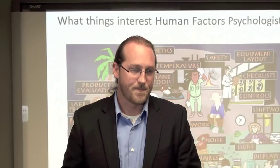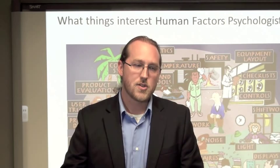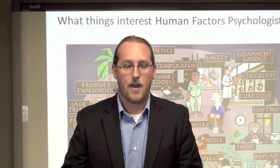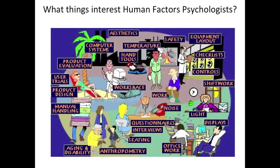So what type of things interest human factors psychologists? There's a variety of different topics. These range from aesthetics — how something actually looks and feels — to product evaluation, product design, manual materials handling, aging and disability, anthropometry, office work and shift work, controls, checklists for safety, how we lay out equipment, and just how people behave in the workspace.